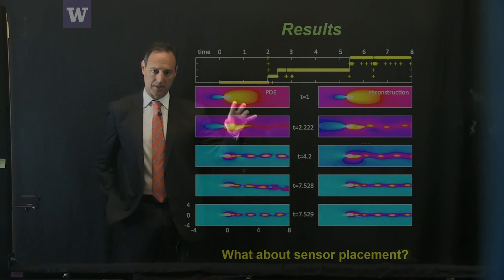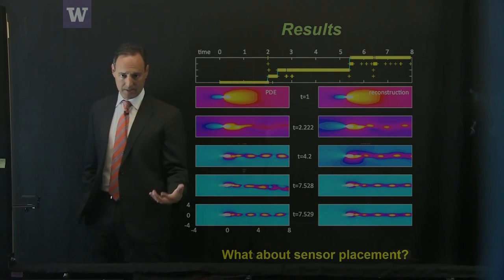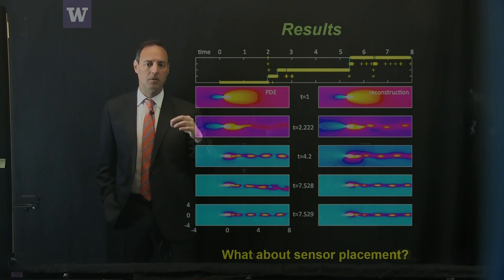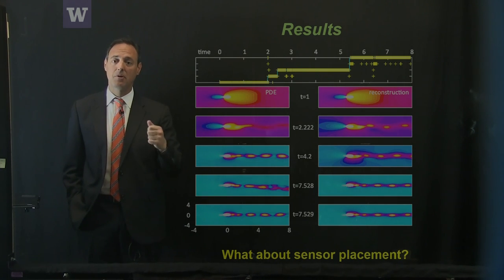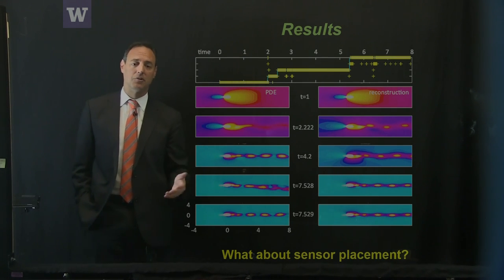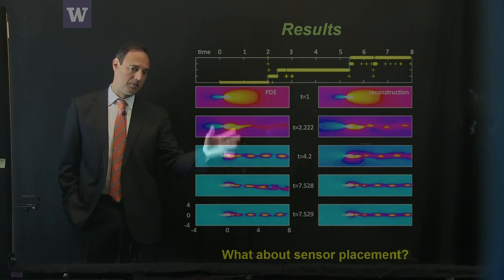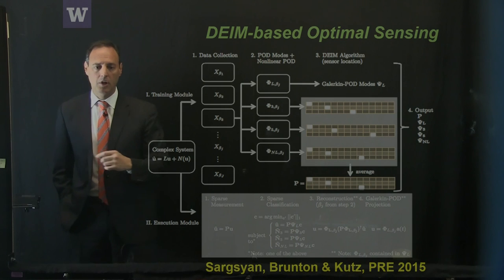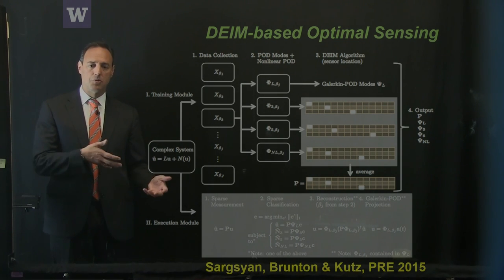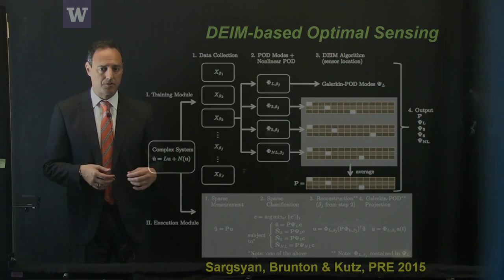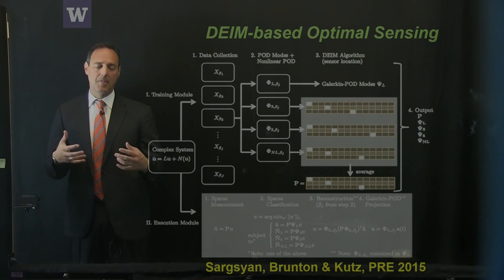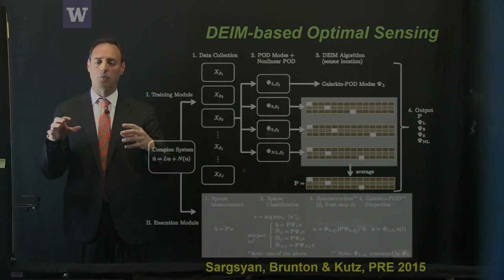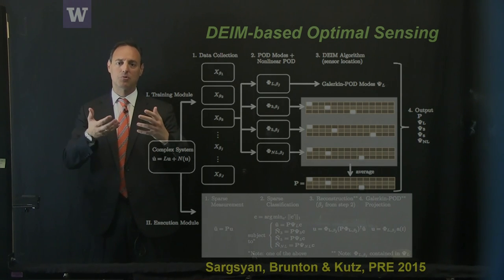What's not addressed is where to put the sensors. We had some idea to put sensors where the largest variability happens — where the minimum and maximum POD modes occur. But we'd really like a more optimal way to do this. Obviously what we did was not optimal, so the question is: can we enact an algorithm to find optimal sensor locations? This was also done with Susie Sargassian and Steve Brunton, published in Physical Review E, looking at a methodology for optimizing sensor locations.